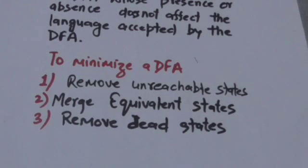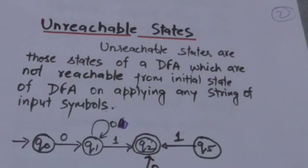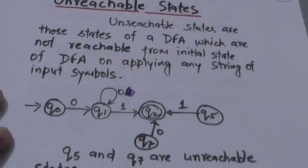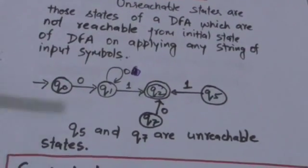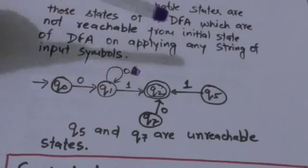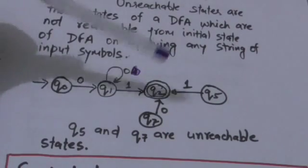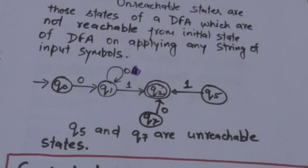First we will study what unreachable states are. Unreachable states are those states of a DFA which are not reachable from the initial state on applying any string of input symbols. In this DFA, whatever string of input symbols you apply, the DFA will never reach states Q5 and Q7. So Q5 and Q7 are unreachable states, and when we minimize the DFA we have to remove them.